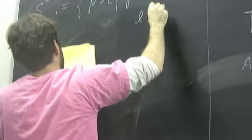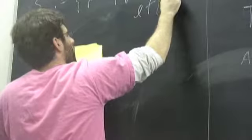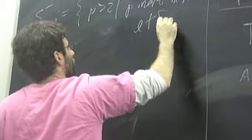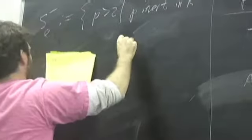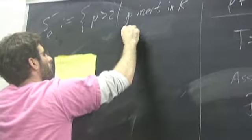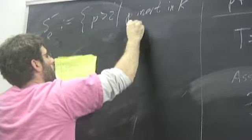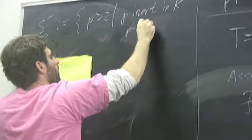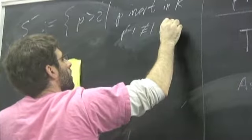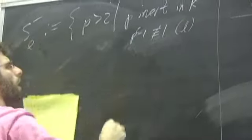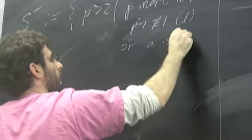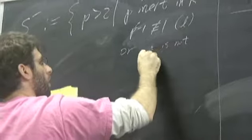P inert in K and L doesn't divide well let's do it that P squared minus one is not congruent to one mod is not congruent to one mod L or A is not an L power